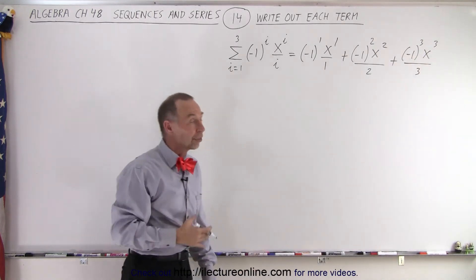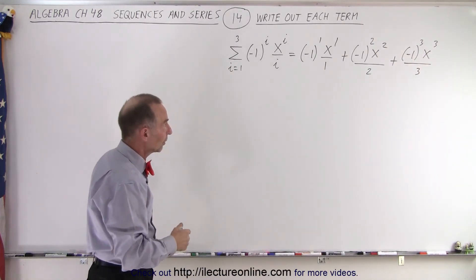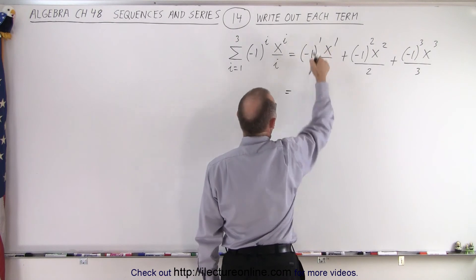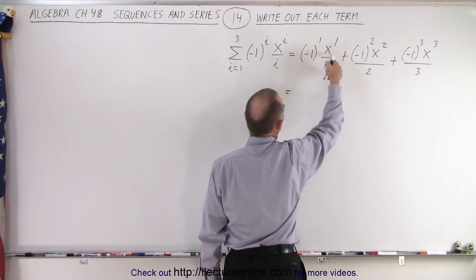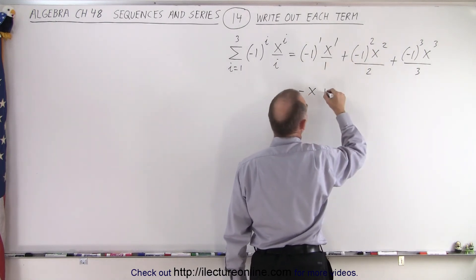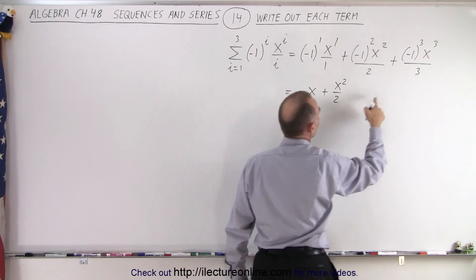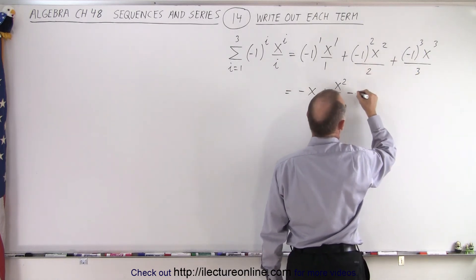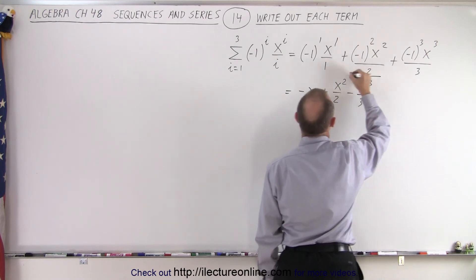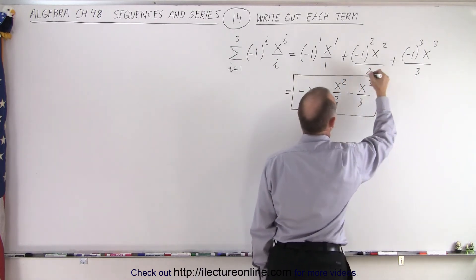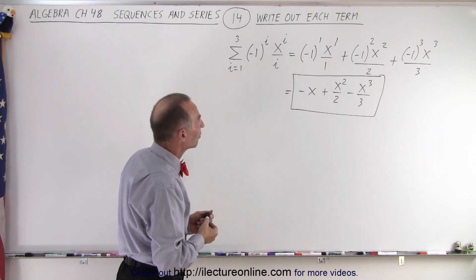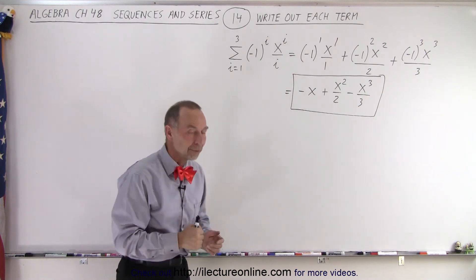You can see that you end up with three separate terms because in each case x has a different exponent. This becomes: negative one to the first power is negative one, times x divided by one, which is simply minus x. Negative one squared becomes positive, so we get plus x squared divided by two. And here we have a negative again: minus x cubed divided by three. So the result is minus x plus x squared over two minus x cubed over three, and that is how it's done.